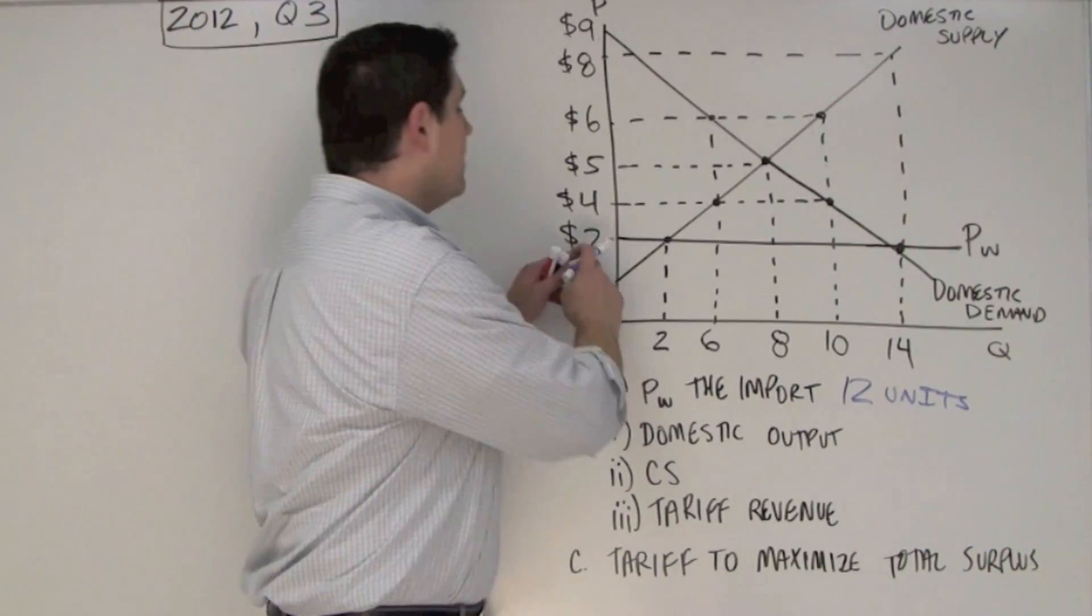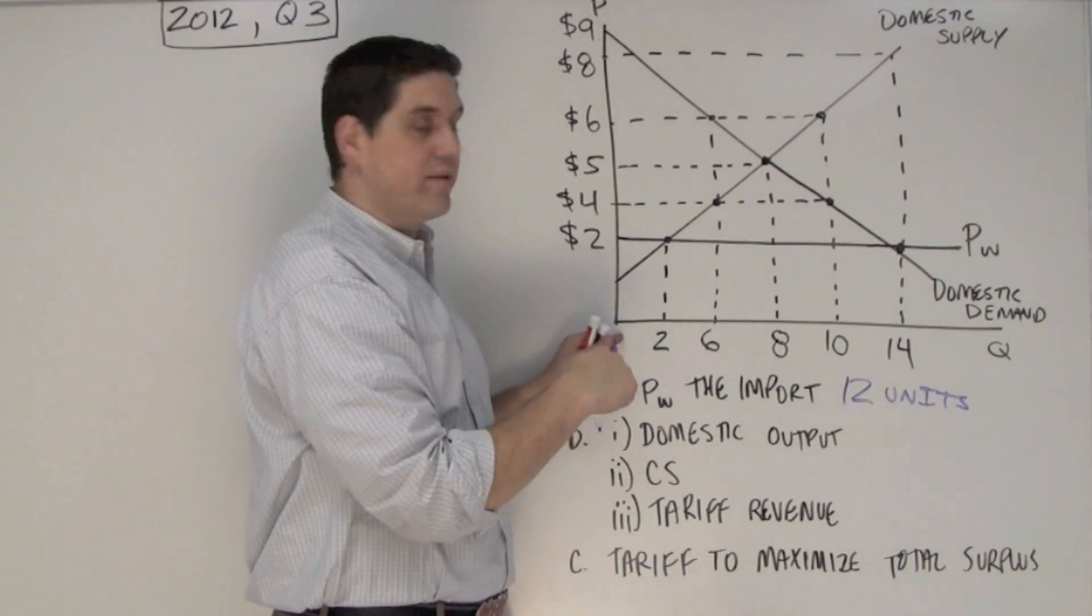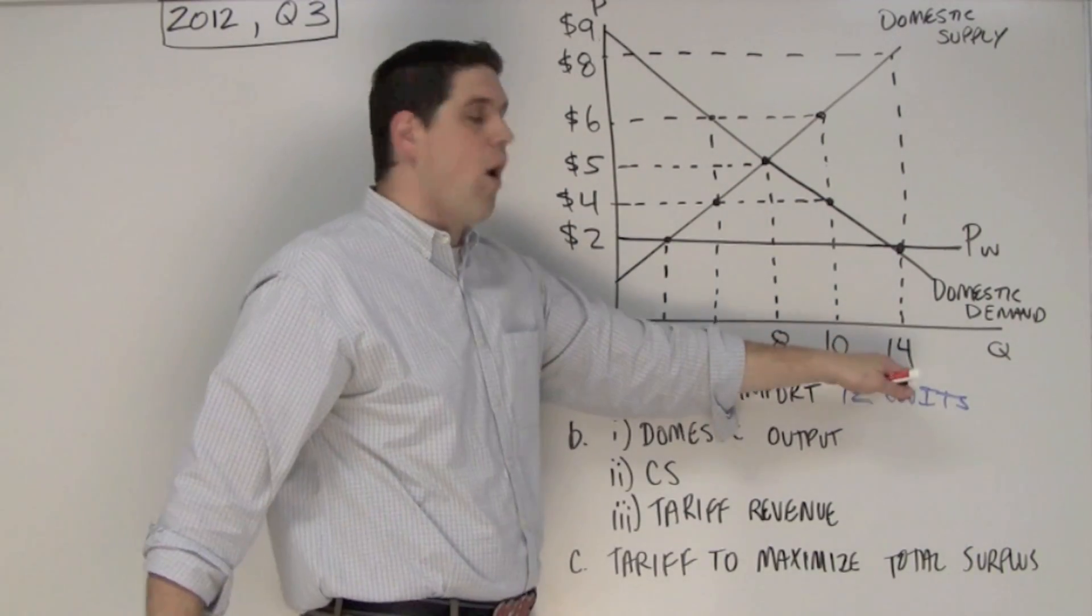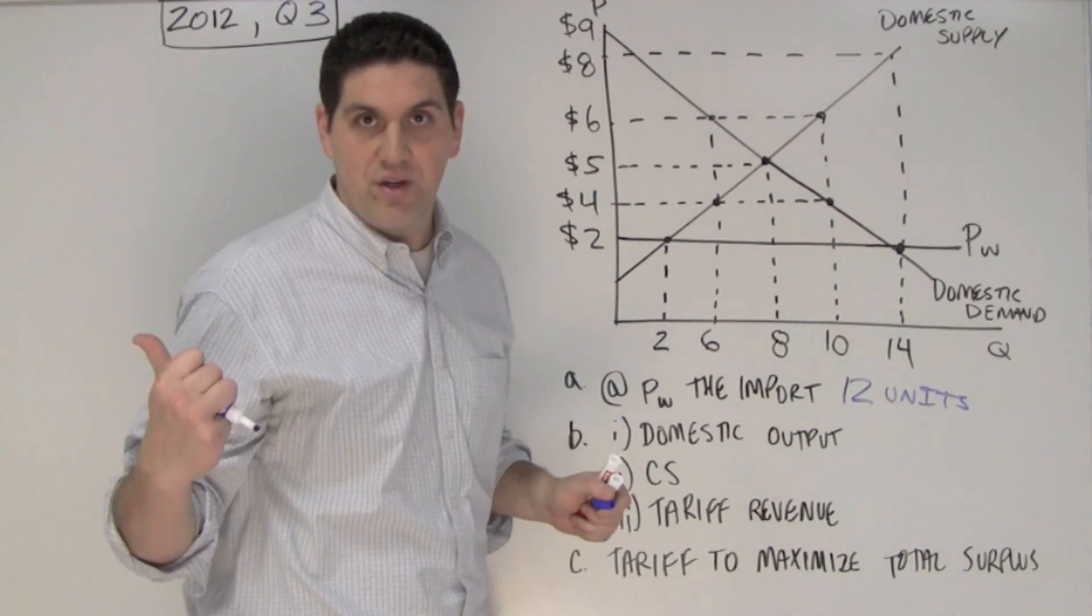Wait, say that again? At $2, this country is going to produce 2 units. That's what the quantity supplied is, that's what the supply curve is. But consumers in this country want 14 units, and so they're going to pick up those 12 units from the other countries.